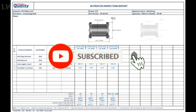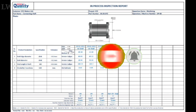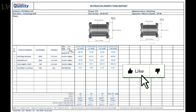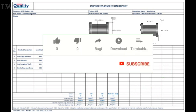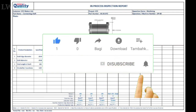Here is an example of the in-process inspection report. We have one product with a product design drawing shown below. We need to add the product characteristics in the inspection report to check in the production process. Refer to the inspection report below for your reference.